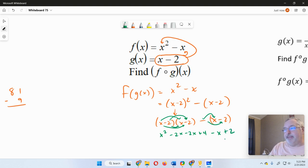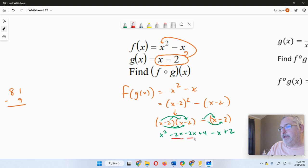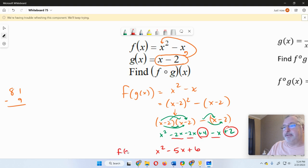And so now we just combine things that we can combine together. So we've got negative 2x, negative 2x, and negative x. So that's 5x. We've got x squared minus 5x, and then we've got 4 plus 2 plus 6. And so that's f of g of x. That's all there is to it.